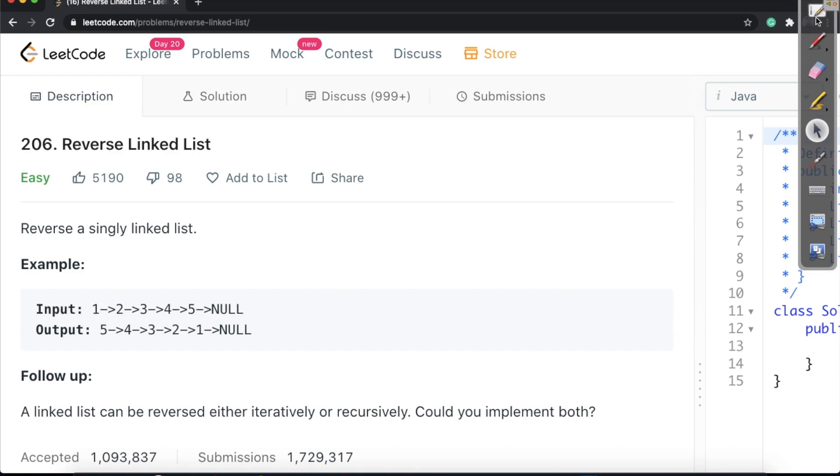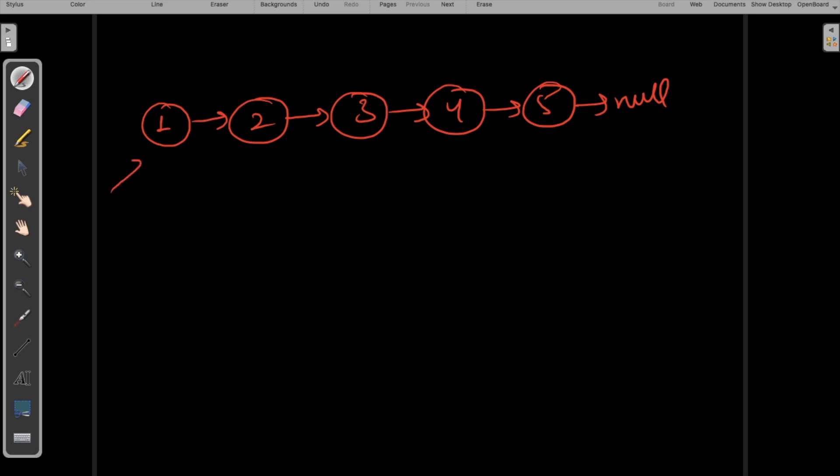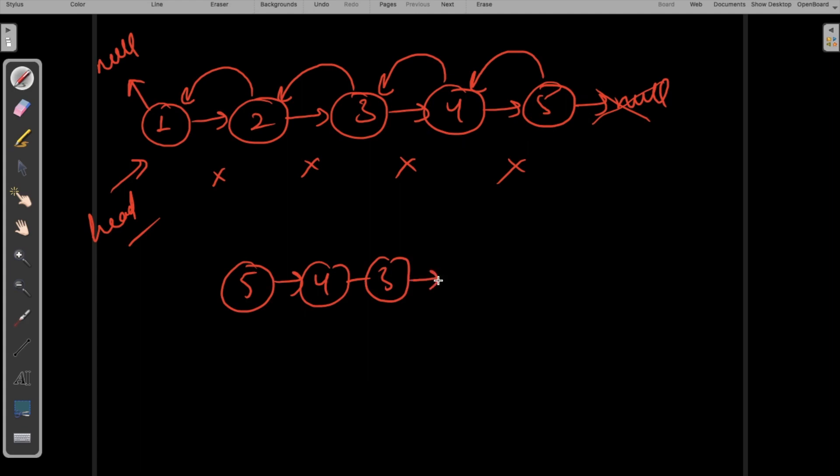So here is my linked list with the head pointer. Basically I have to break this link and create this link pointing backwards. Similarly, I have to break the link between 2 and 3 and make 3 point to 2. Same pattern for 4 to 3, 5 to 4, and 5 will point to null instead of the original null pointer. And the one which was pointing to 2 should now point to null. So I need to generate a reversed linked list: 5, 4, 3, 2, 1, and finally this one will be pointing to null.